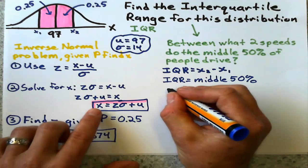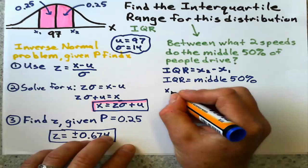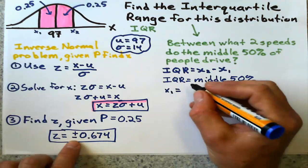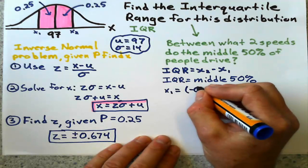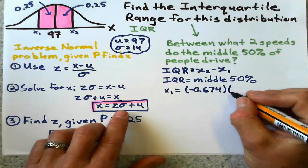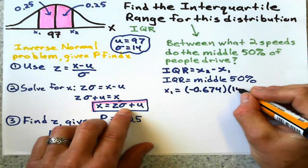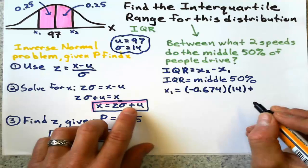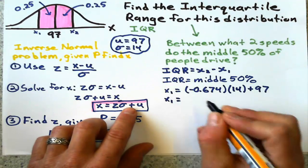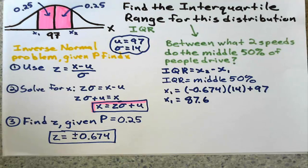My first x₁ is going to be the negative Z value: negative 0.674 times the standard deviation 14 plus the mean 97. That first speed gives me 87.6 kilometers an hour.